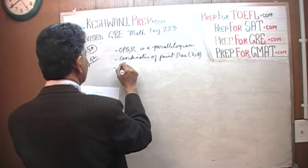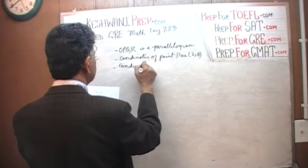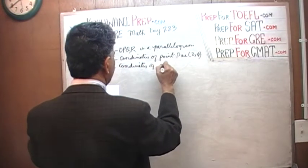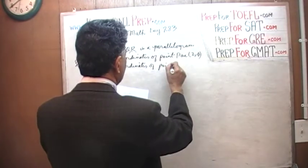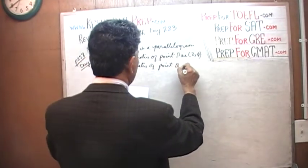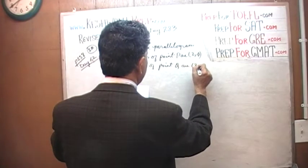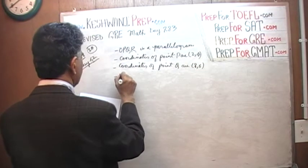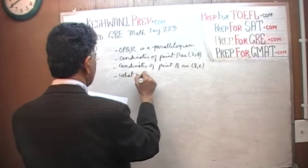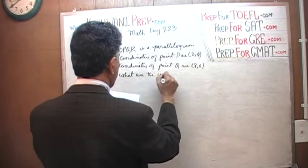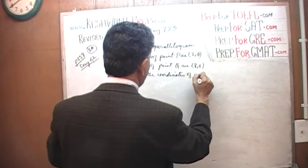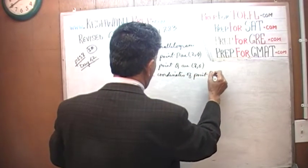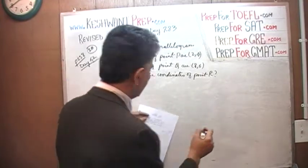OPQR, we are told, is a parallelogram. We are also told that the coordinates of point P are 2 and 4, and coordinates of point Q are 8 and 6. The question is, what are the coordinates of point R?